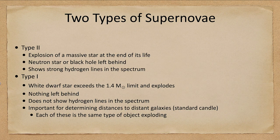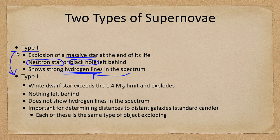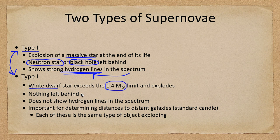We've now talked about two types of supernovae. The type II supernova is the explosion of a massive star at the end of its life, which leaves behind either a neutron star or a black hole depending on the mass of the remnant. When we look at these, we see strong hydrogen lines in the spectrum — that's a way to identify them. Just seeing a star brighten doesn't tell us which type it is, but if we take a spectrum and see strong hydrogen lines, that means it is a type II supernova. A type I supernova is a white dwarf star that exceeds that 1.4 solar mass limit and explodes leaving nothing behind. This has no hydrogen lines, because what exploded was a ball of carbon detonating outward and will not have significant quantities of hydrogen.